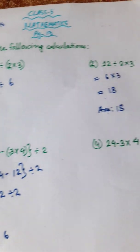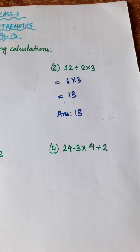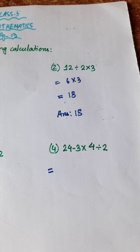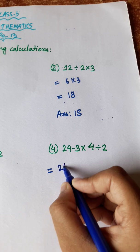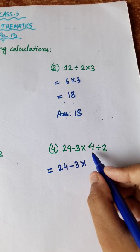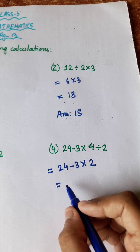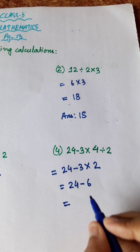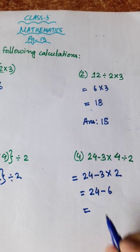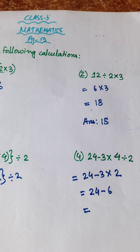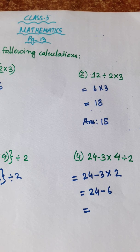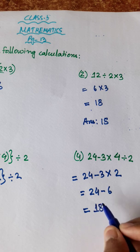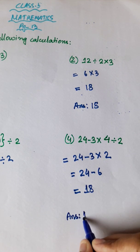Now if you have a bracket within a bracket, let's do this. We can add division: 4 divided by 2 is 2. Then multiplication: 24 minus 3 into 2 is 6. Then just normal subtraction: 24 minus 6. Counting up: answer is 18.